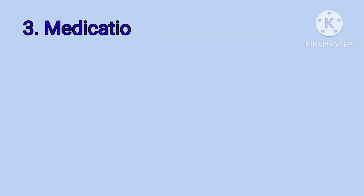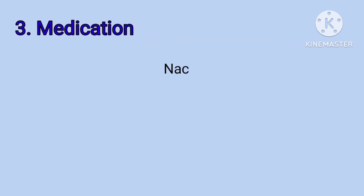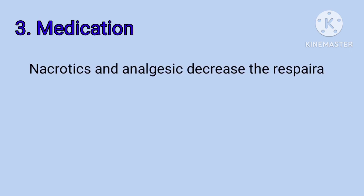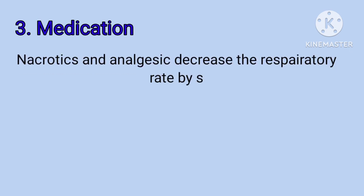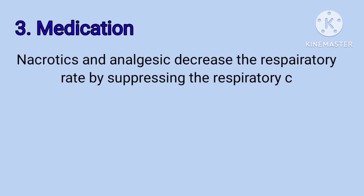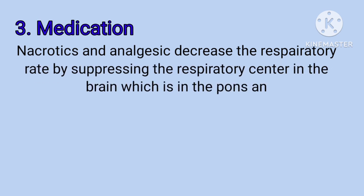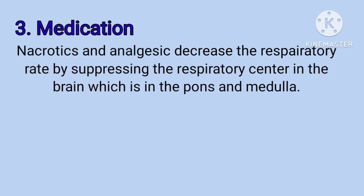The third one is medication. Narcotics and analgesics decrease the respiratory rate by suppressing the respiratory center in the brain, which is in the pons and medulla.